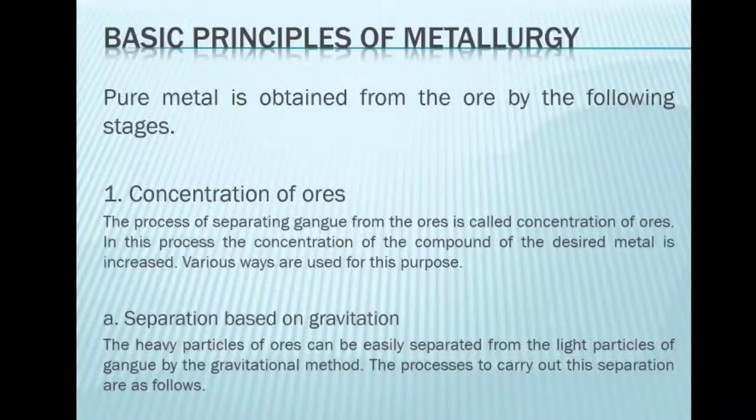Basic principles of metallurgy. Pure metal is obtained from the ore by the following steps. Concentration of ores. The process of separating gang from the ores is called concentration of ores.